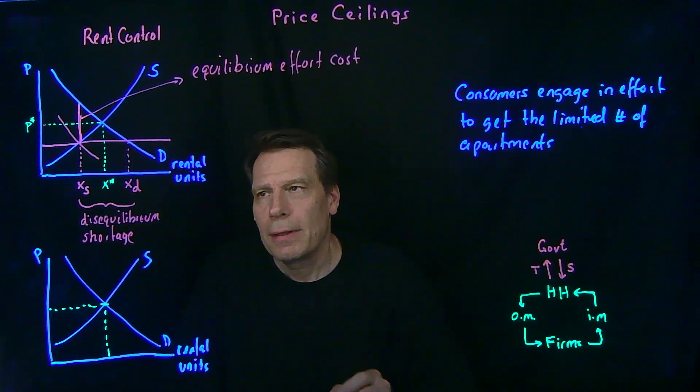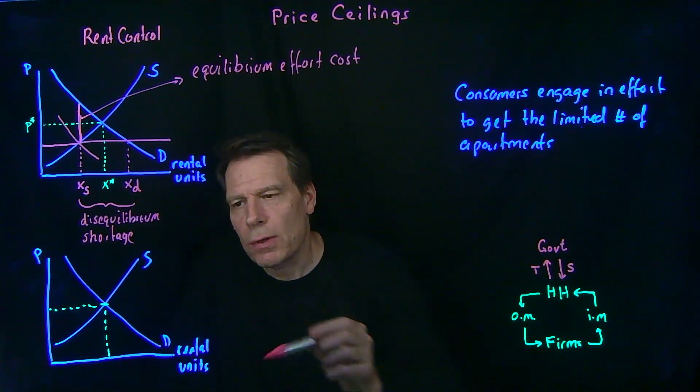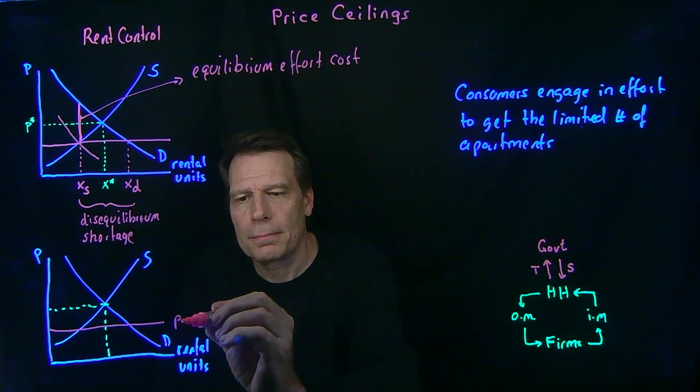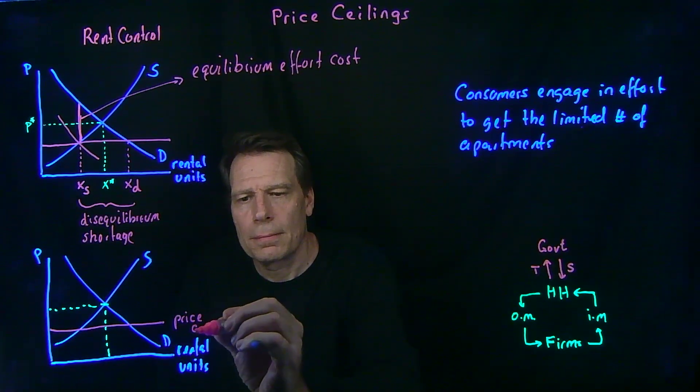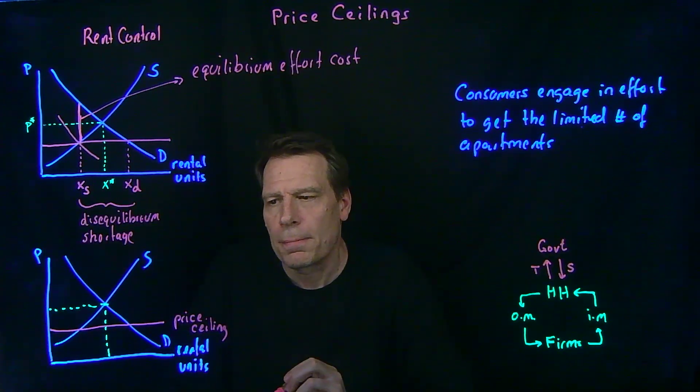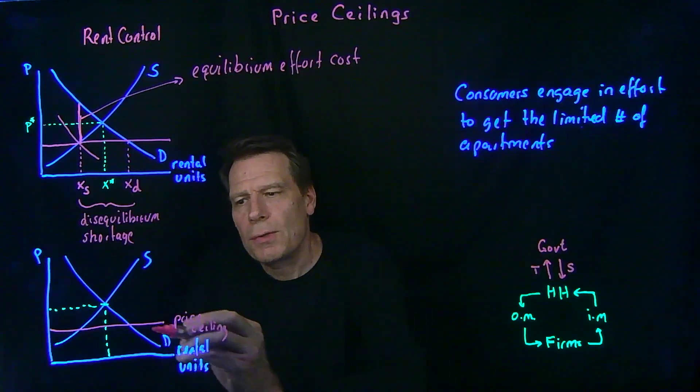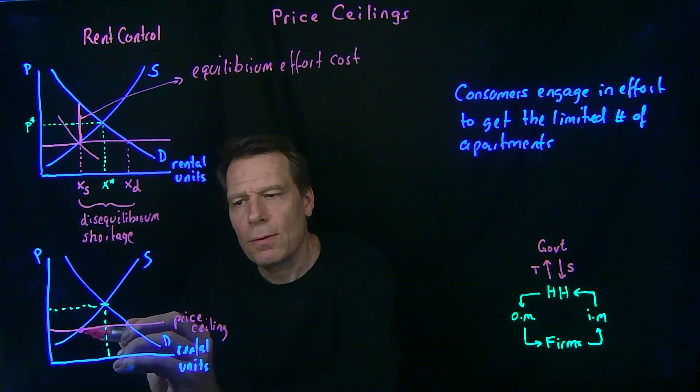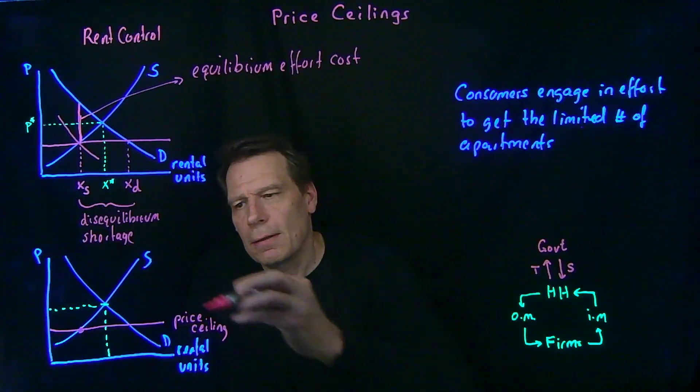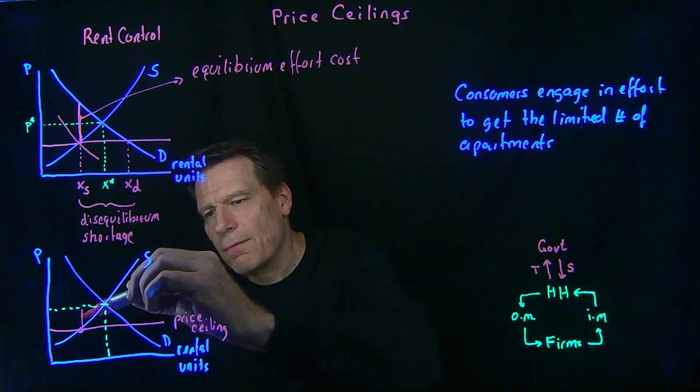So now, what do we need from up here? Well, we need to see where the price ceiling is, so here is our price ceiling, set by the rent control policy. And then, we know that the equilibrium is going to happen here, once the demand curve shifts, but instead of shifting it, let's just put that equilibrium effort cost in.